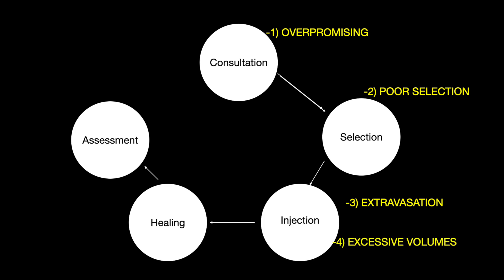Mistake number four, injecting too much sclerosant. Beginners often inject large areas of veins with each injection. So instead, you should inject small volumes, very slowly and under low pressure.